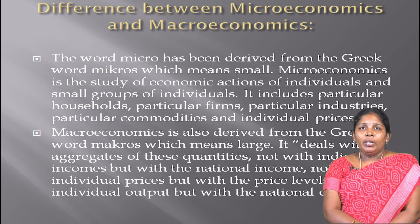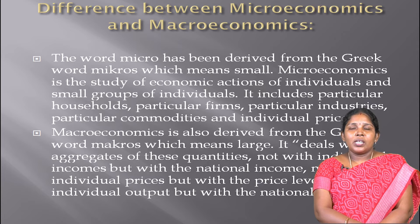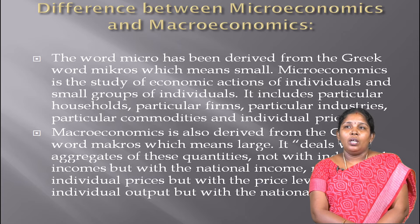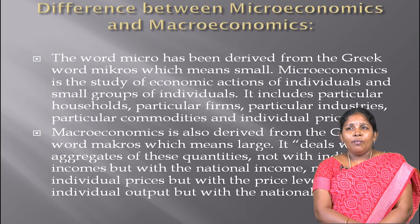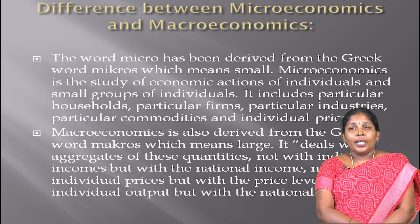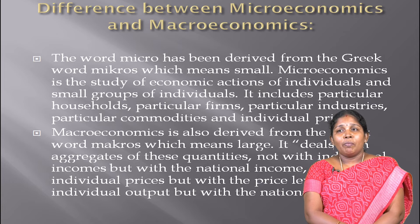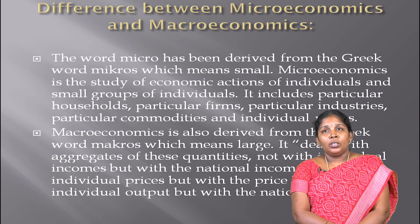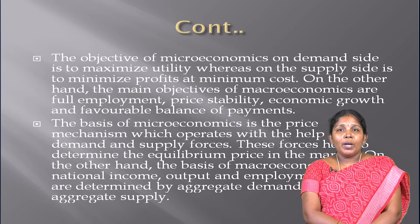Difference between microeconomics and macroeconomics. The word micro is derived from the Greek word micros, meaning small. Microeconomics is the study of economic actions of individuals and small groups, including particular households, firms, industries, commodities, and individual prices. Macro is derived from the Greek word macro, meaning large. It deals with aggregates — not individual income but national income, not individual prices but the price level, not individual output but national output. The objective of microeconomics is to maximize utility on the demand side and minimize cost on the supply side.